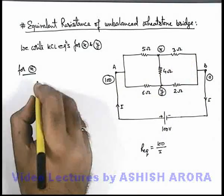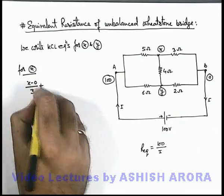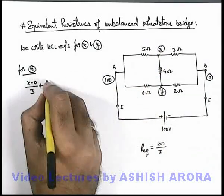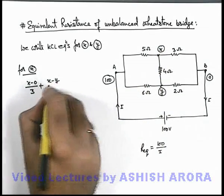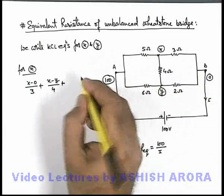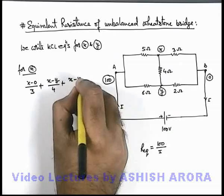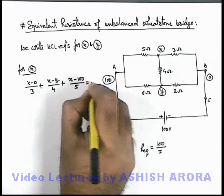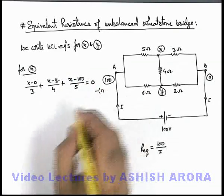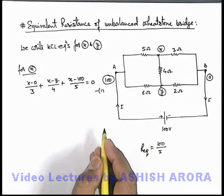The current going in this direction will be (X minus 0) by 3, plus the current going through the 4 ohm resistance will be (X minus Y) by 4, plus the current going through the 5 ohm resistance will be (X minus Y) by 5. This should be equal to zero. This is our equation 1, and it is a linear relation in the potentials X and Y.